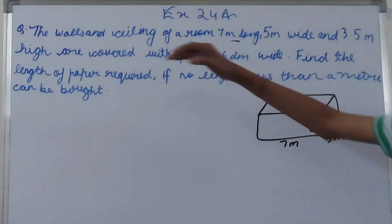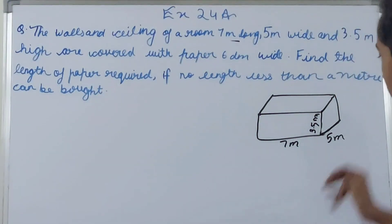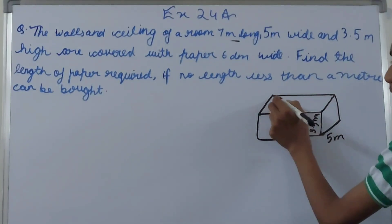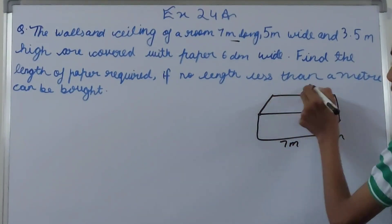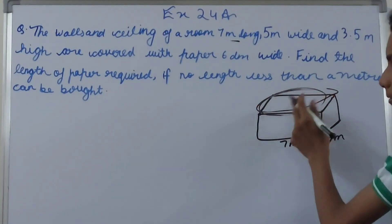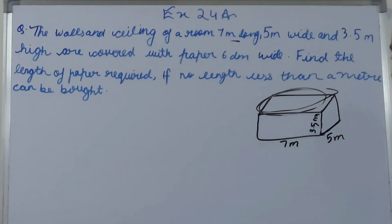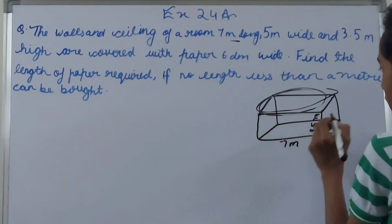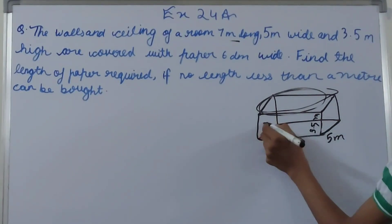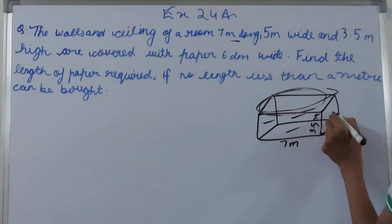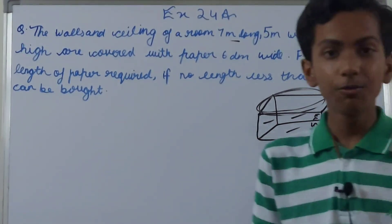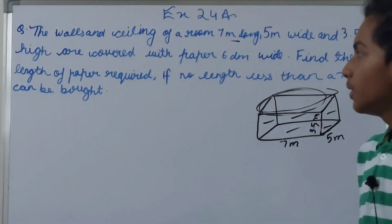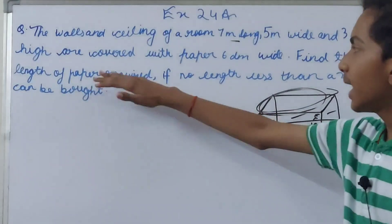The problem asks us to cover the walls and the ceiling. The ceiling is the top part — the roof. We have to cover all four walls and the ceiling with paper.